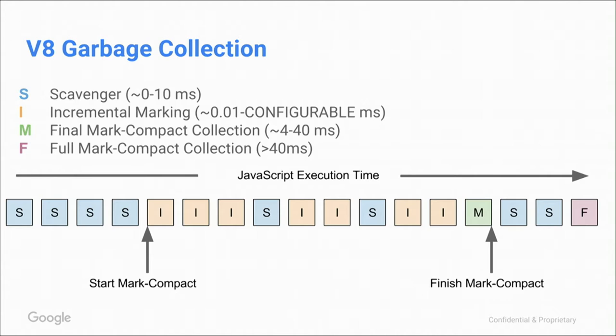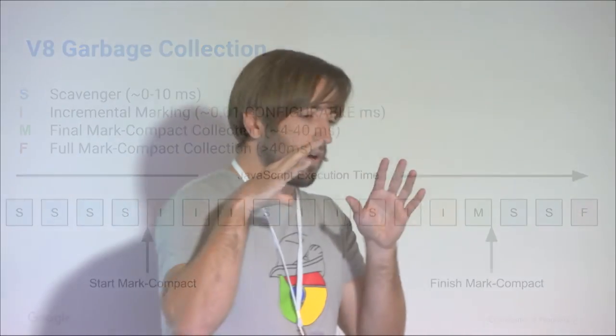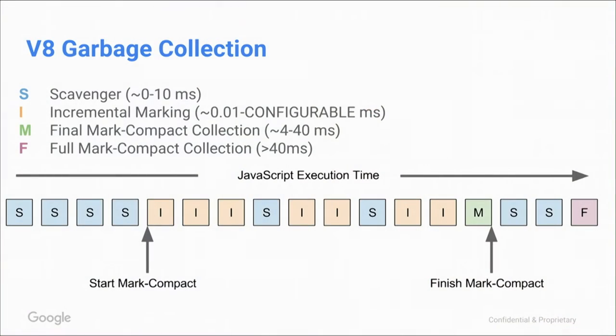In between, a few scavengers may happen. Then at one point we finish the whole marking job — most of the transitive closure of live objects is marked — and we finalize this garbage collection cycle. This is where we really know what's live. We start the concurrent sweeper threads and perform memory compaction. This may take some time, usually 4 to 40 milliseconds. We're currently working to get these pauses even shorter, like 6 milliseconds. The bigger your heap, the longer finalization takes. After that, execution continues with more scavenger events.